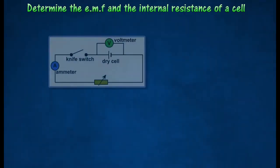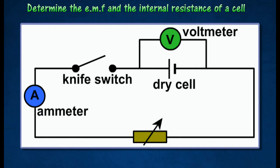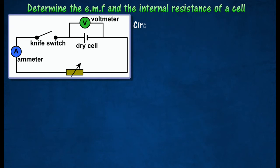The following circuit can be used to determine the electromotive force and the internal resistance of a cell. The reading of the voltmeter when the circuit is open is the electromotive force value of the cell.